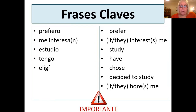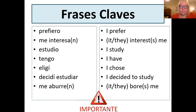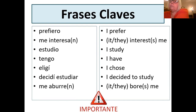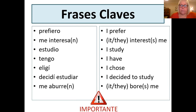Elegir is the verb in the infinitive. Elegí is I chose. I decided to study — the infinitive to decide is decidir, so decidí. And then it or they bore me: me aburren, or me aburre if it's one thing. You need to make sure that all of those things are written down in full. I'm expecting you to pause the video as and when you need to do that.